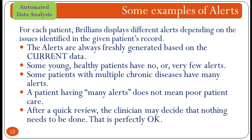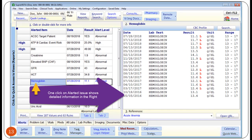Can you show me some examples of alerts? For each patient, Brilliance displays different alerts depending on the issues identified in the given patient's record. The alerts are always freshly generated based on the current data. Some young, healthy patients have no or very few alerts. Some patients with multiple chronic diseases have many alerts. A patient having many alerts does not mean poor patient care — after a quick review, the clinician may decide that nothing needs to be done, and that is perfectly okay. The left pane on the alerts tab shows the list of issues that need clinician's review. When the clinician clicks on a listed item, the right pane shows relevant data about the selected issue. In this case, the user clicked on hemoglobin, which is low. Brilliance displays historical data about hemoglobin so the provider can review the trend and decide if further evaluation is needed.